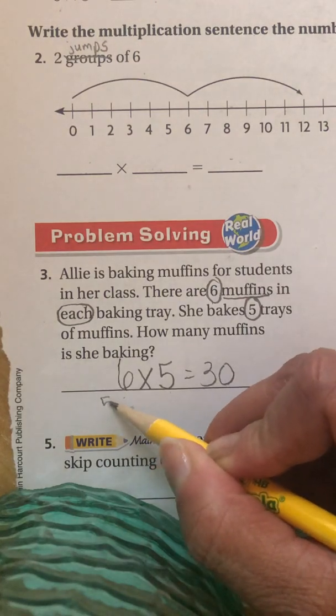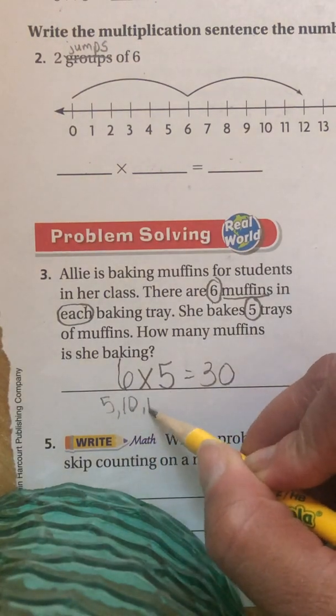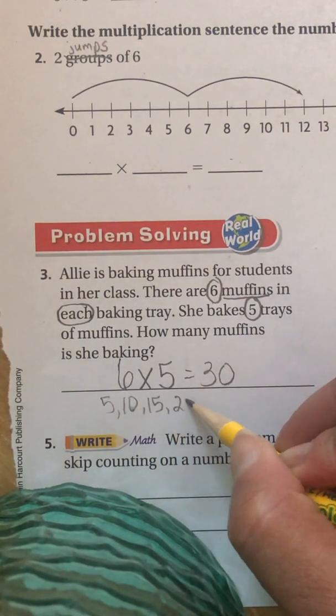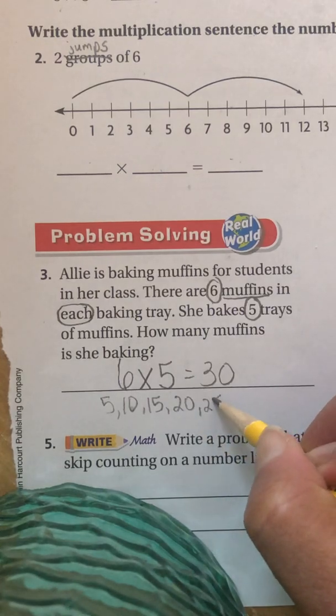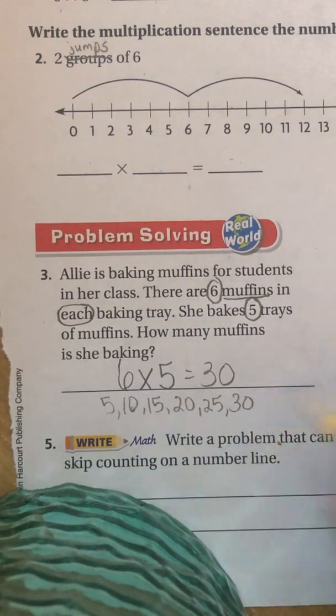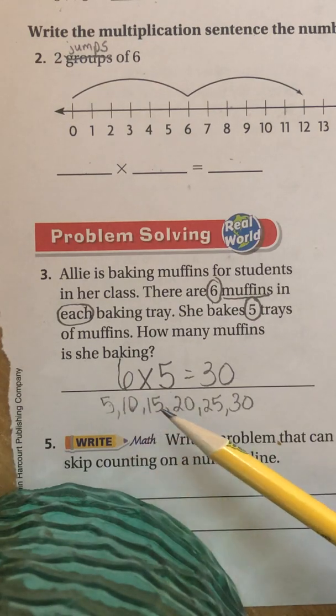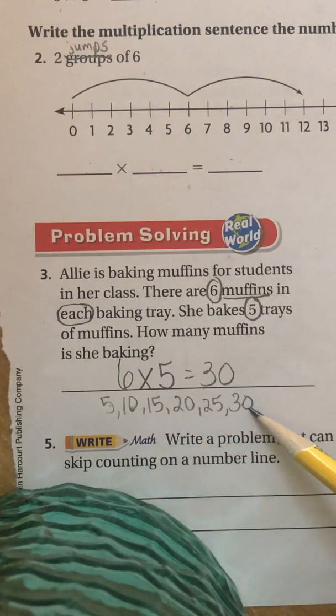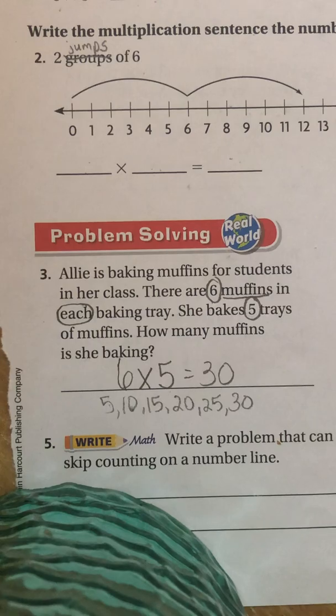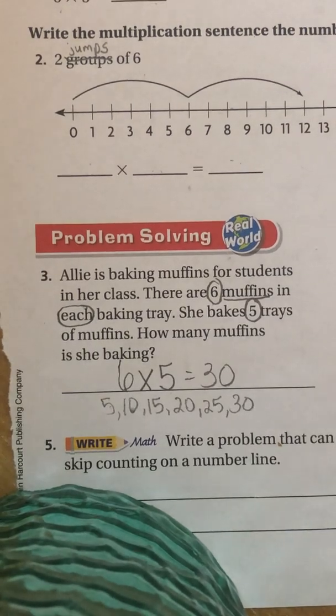Six muffins, and we're going to do that five times because we're going to do that in five different trays so that she can give one to everyone in her class. Six groups of five make 30. You could have skip counted. Five, 10, 15, 20, 25, 30. I skip counted six times. One, two, three, four, five, six. So there's your answer. You will do number four on your own.